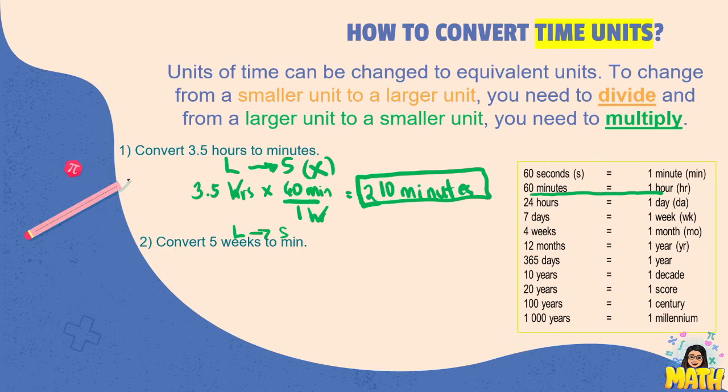Kailangan muna yung weeks, i-convert muna natin into a smaller unit which is days, and then days into hours, hours into minutes to be able to convert it properly. So let's start with five weeks, and then compare with days. We have seven days in a week, so we can have five times seven, that is 35 days.